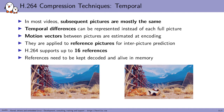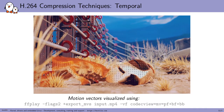Motion vectors are calculated between pictures and indicate how a part of the image will move or change in following frames. In order to do this, references need to be kept decoded in memory. This is a visualization of motion vectors using ffplay from FFmpeg, basically indicating how elements of the pictures have moved from previous frames as calculated with motion vectors.